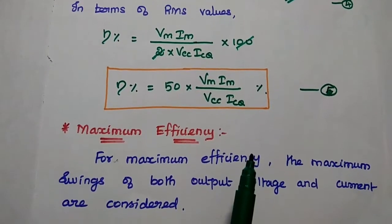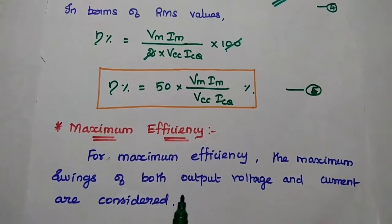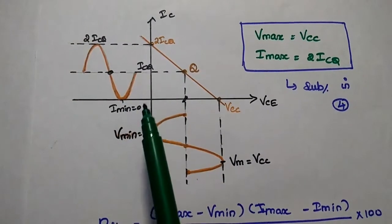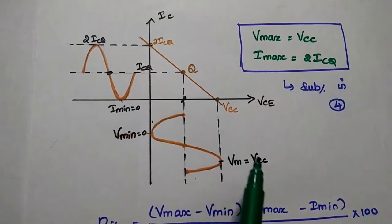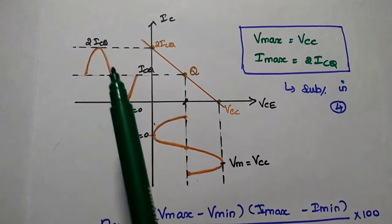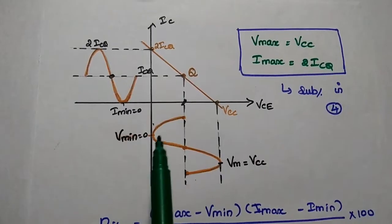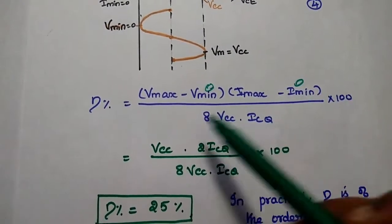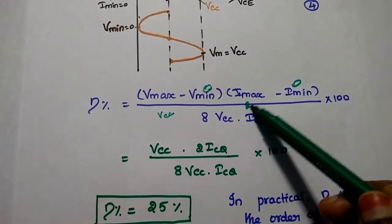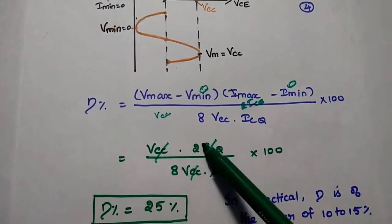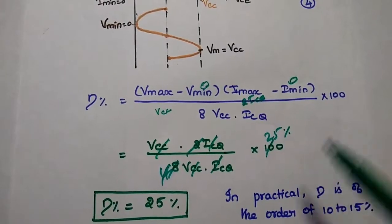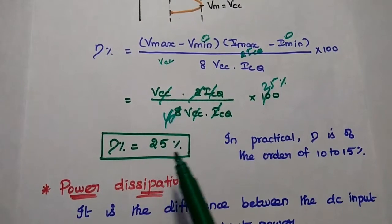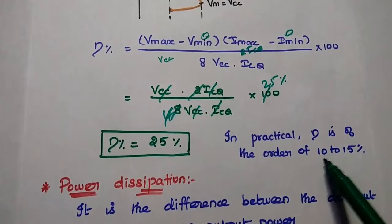Next, we find the maximum efficiency of the Class A amplifier. For maximum efficiency, maximum swings of both voltage and current are considered: Vmax = VCC, Imax = 2 × ICQ, Vmin = 0, and Imin = 0. Substituting these into the fourth equation, the maximum efficiency works out to only 25%. In practical circuits, we can achieve only 10 to 15 percent.